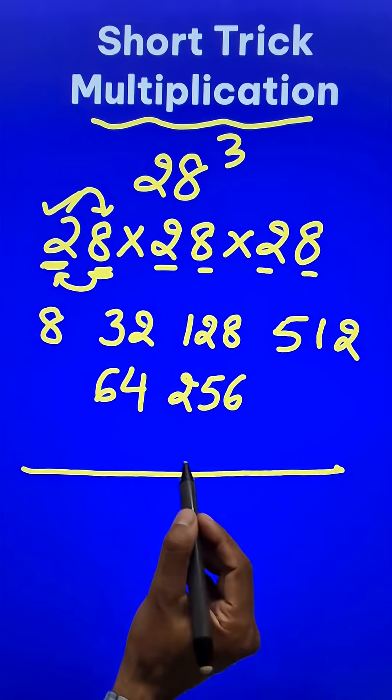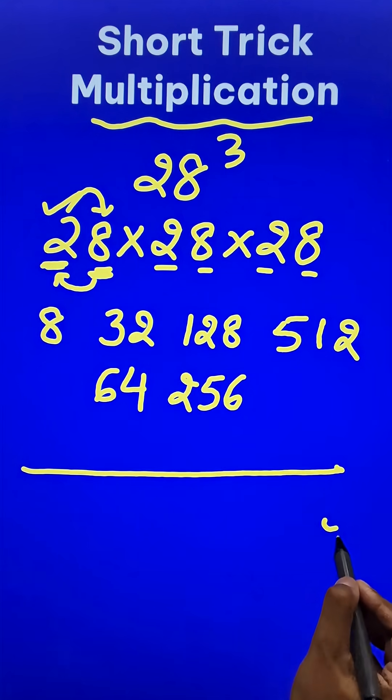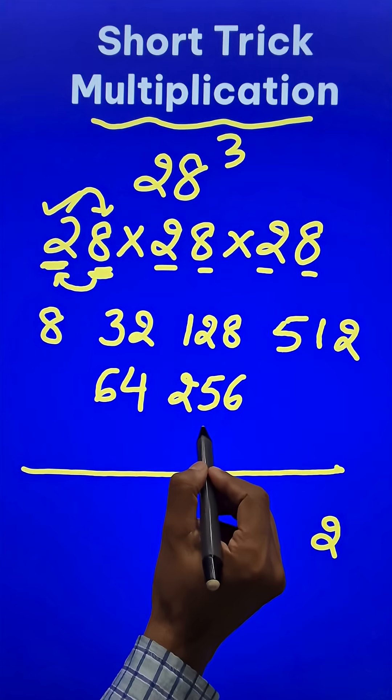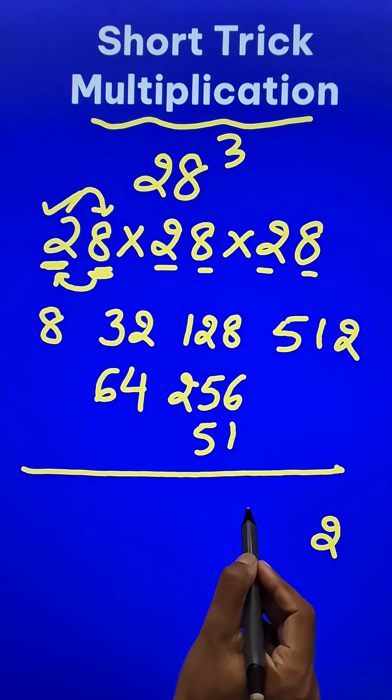And now I'll put a horizontal line here. 512, the 2 comes down, and this 51 gets carried forward here. So 8 plus 6 is 14, plus 1 is 15. So 5 and a 1 carry.